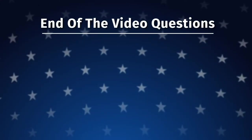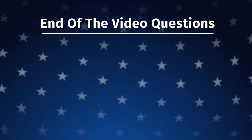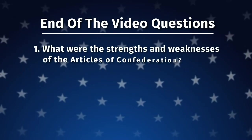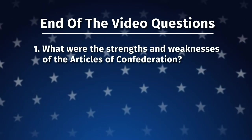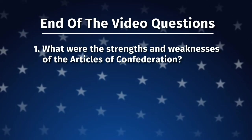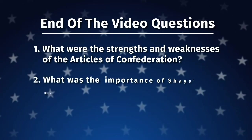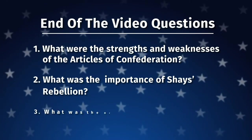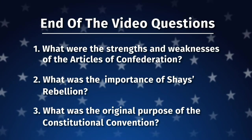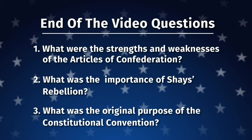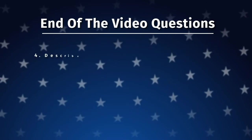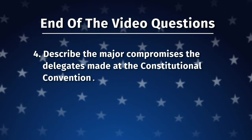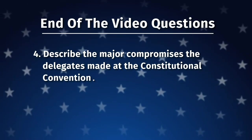By the end of the video, you need to be able to answer these four questions. One, what were the strengths and weaknesses of the Articles of Confederation? Two, what was the importance of Shays' Rebellion? Three, what was the original purpose of the Constitutional Convention? And four, you need to describe the major compromises the delegates made at the Constitutional Convention.